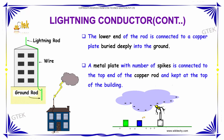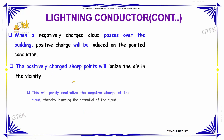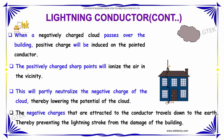When a negatively charged cloud passes over the building, a positive charge is induced on the pointed conductor. The positively charged sharp points then ionize the air in the vicinity, which partially neutralizes the negative charge of the cloud, thereby lowering the potential of the cloud.